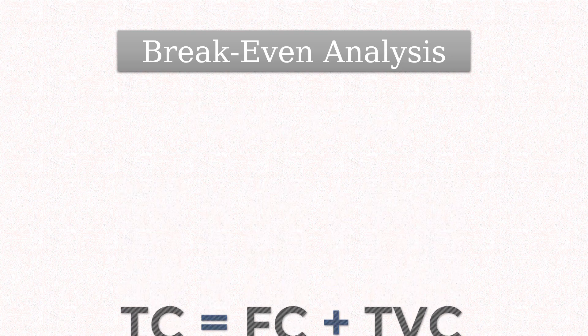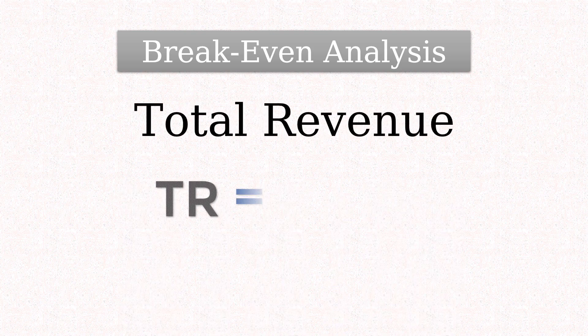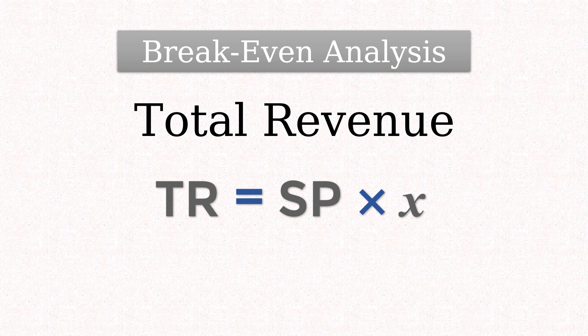Now, total revenue is selling price per unit times the number of items sold. Note that selling price per unit is sometimes denoted simply as S or P and the number of units as Q.